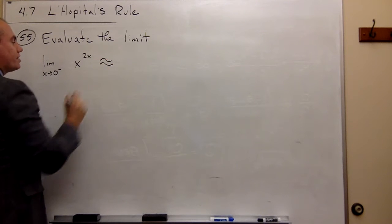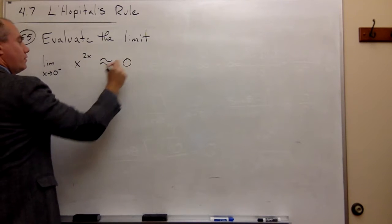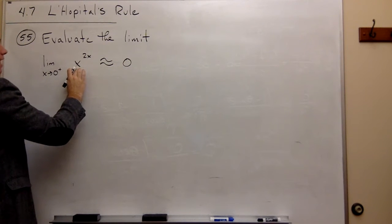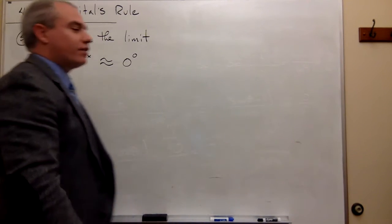First let's look at the form. If I plug in zero here, I kind of get zero for x, and then 2 times zero is zero. So I get zero to the zero.